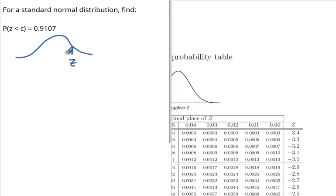So I'm gonna put it over here to the right and point out that the shaded area to the left of this z-score is the 0.9107 that we're told.